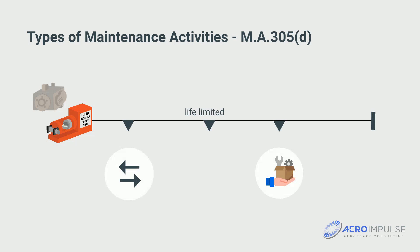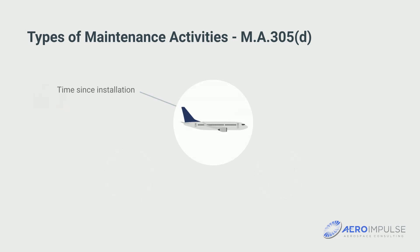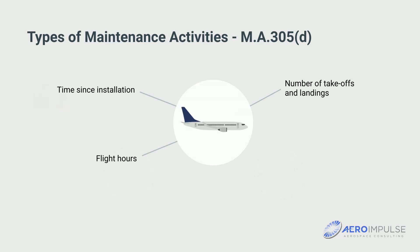Typical parameters that affect the serviceability of aircraft and components are the time since installation, the flight hours, the number of takeoffs and landings, the area of operation of the aircraft, and the intended use.